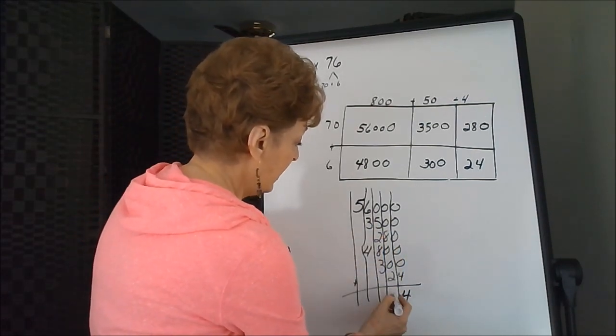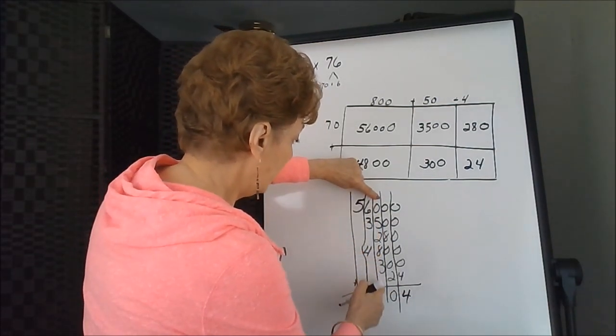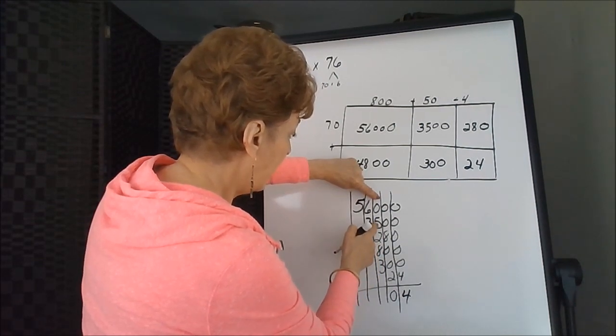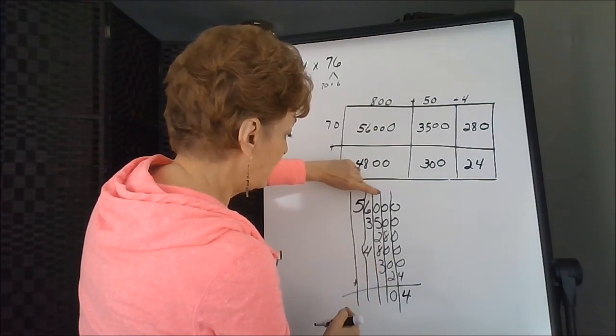8 plus 2 is 10. I'm going to put down the zero and carry the 1. Looking through here, do I have any groups of tens? I have an 8 and a 2, that makes 10, so that's 15, and 3 more is 18, and 1 that I carried is 19.